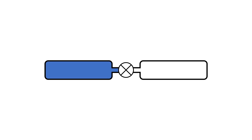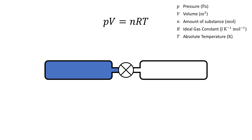If we open the valve, the pressure will equalize, but what will the resultant pressure be? Well, we use the ideal gas law to describe all of this. The ideal gas law states that the product of pressure and volume is equal to the amount of substance multiplied by the ideal gas constant and the temperature T.